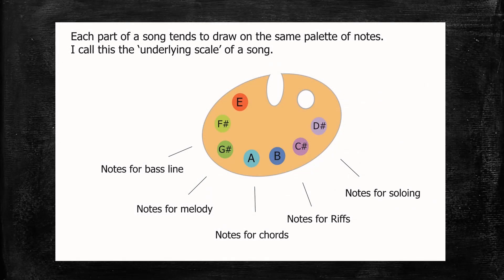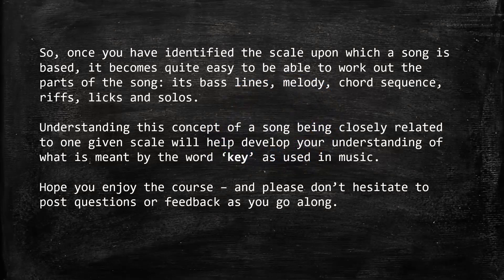Each part of a song tends to draw on the same palette of notes — I call this the underlying scale of a song. So once you have identified the scale upon which a song is based, it becomes quite easy to work out the parts of the song: its bass lines, melody, chord sequence, riffs, licks, and solos. Understanding this concept of a song being closely related to one given scale will also help develop your understanding of what is meant by the word 'key' as used in music.